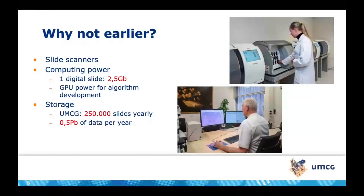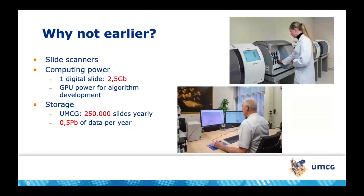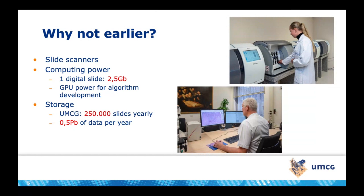We need help. We've had computers for years — why didn't we think about this earlier? What we needed was a slide scanner, which we now have. We also need a lot of computing power. One digital slide — one glass slide that we used to look at through a microscope — is two and a half gigabytes. In the UMCG alone, we look at 250,000 slides on a yearly basis, which generates half a petabyte of data per year. Because these files are so large, if you want to develop an algorithm, you need high GPU power.